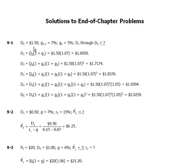We know that the current dividend D0 is $1.50, and the company will grow by 7% in the next three years, then continue to grow by 5% after that. D1 is the dividend at time one, equal to D0 times (1 + g1). Since it grows by 7%, D1 = 1.5 × 1.07 = $1.6050.